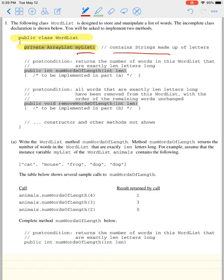We have this public int numWordsOfLength which takes an integer length. What does it do? Postcondition: returns the number of words in the WordList that are exactly length letters long.